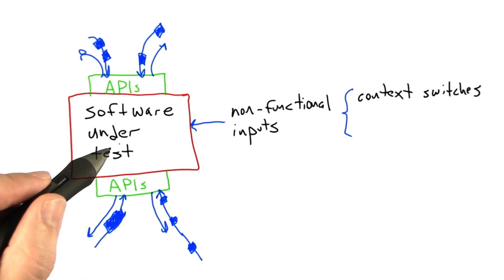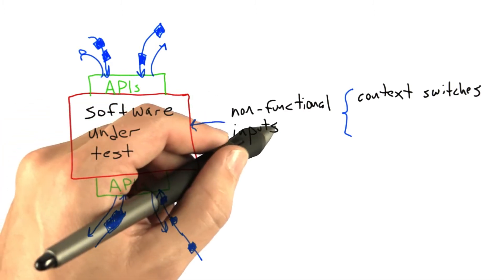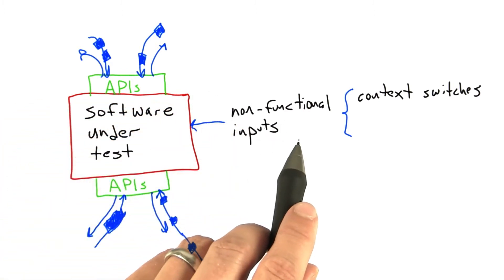The problem is that the timing of these context switches is completely not under the control of our application. It's under the control of the operating system, which provides these non-functional inputs. This makes testing multi-threaded software really quite difficult.